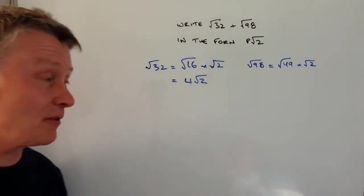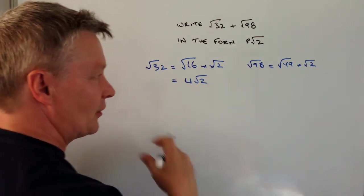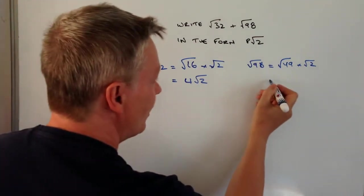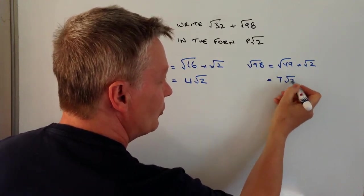It's actually 7 times 7. So the shorthand for writing the simplified version of root 98 is going to be 7 root 2.